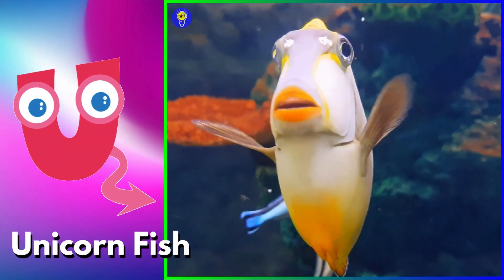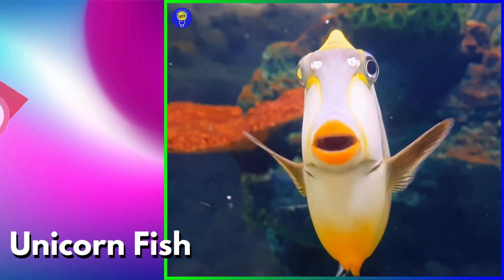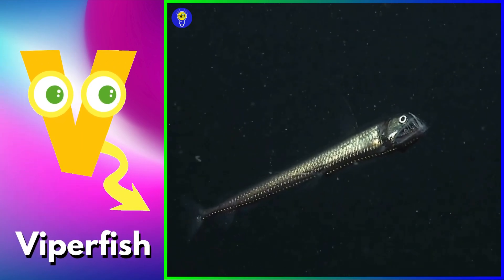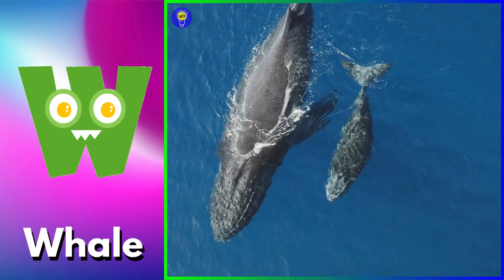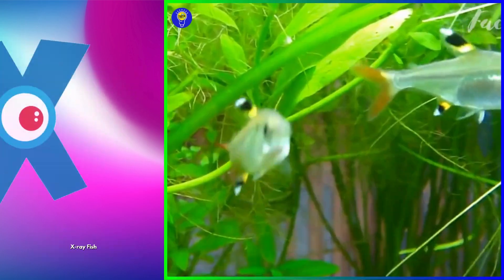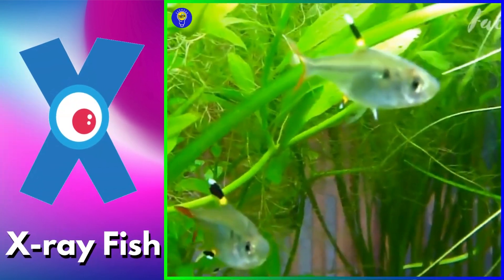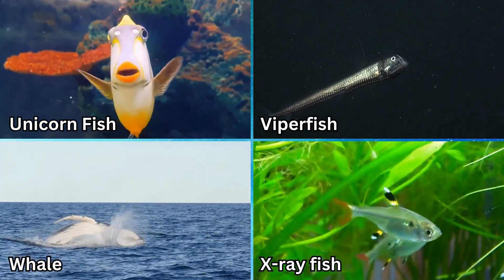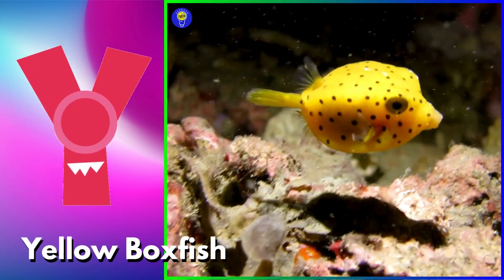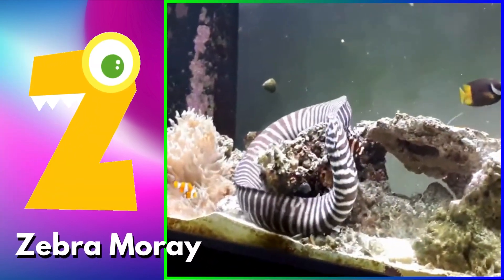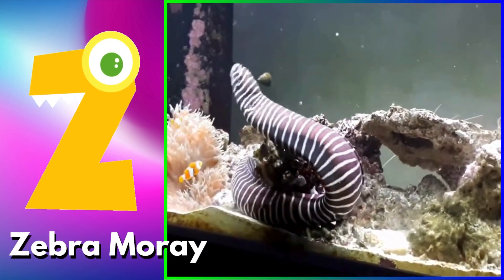U is for unicornfish. Unicornfish. V is for viperfish. Viperfish. W is for whale. Whale. X is for x-ray fish. X-ray fish. Y is for yellow boxfish. Yellow boxfish. Z is for zebra moray. Zebra moray.